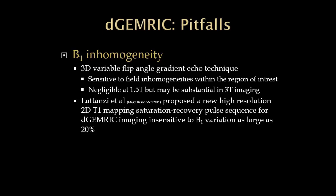Another potential pitfall is B1 inhomogeneity. If using a 3D variable flip angle gradient echo technique — as we use at our institution — it's fine at 1.5T, but moving to 3T introduces sensitivity to field inhomogeneities within your region of interest. It can still be done, but you must tweak your protocol carefully to account for these inhomogeneities. A paper in Magnetic Resonance in Medicine in 2011 proposed a new high-resolution 2D T1 mapping saturation recovery pulse sequence that was found to be fairly insensitive to B1 variation as large as 20%, which may serve as an alternative.